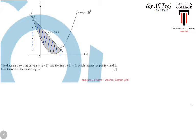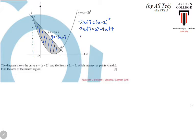Before integrating, we need to find the x-coordinates of points A and B by equating the two equations. Rearranging the line gives y = -2x + 7. Setting equal to the curve: -2x + 7 = (x - 2)², which expands to -2x + 7 = x² - 4x + 4, giving x² - 2x - 3 = 0. Factoring as (x - 3)(x + 1) = 0, we get x = -1 and x = 3.